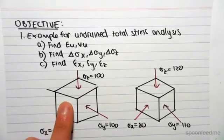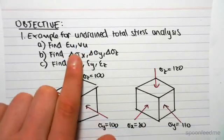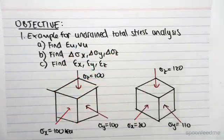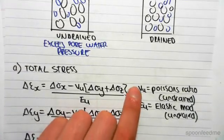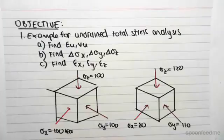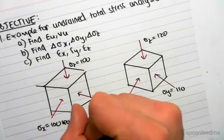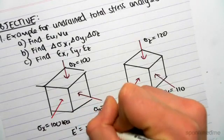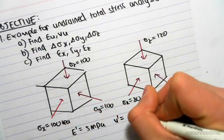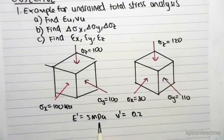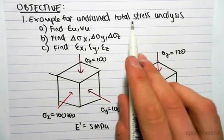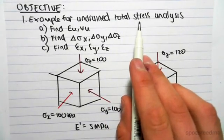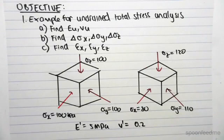Now the first thing we need to do for our undrained case, and because we're doing a total stress analysis, we know for a total stress analysis, we need to use VU and EU. So now say we're given E dash equals 5 MPa, and V dash equals 0.2. We can't use these values for a total stress analysis. We could use it for an effective stress analysis, but not for a total stress analysis.